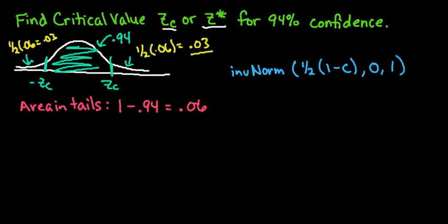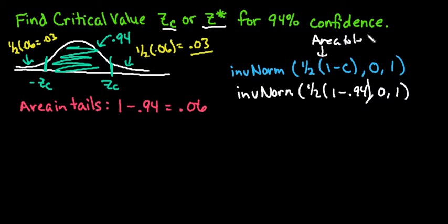So when we go to put this into our calculator, we can either enter inverse norm 1/2(1 minus 0.94), and it won't look exactly like this, but that's what essentially we'll be putting in for the area. This is the area to the left. Or you could just type in inverse norm 0.03, 0, 1, because we found that here. So we did 1/2 of the area on the outside.